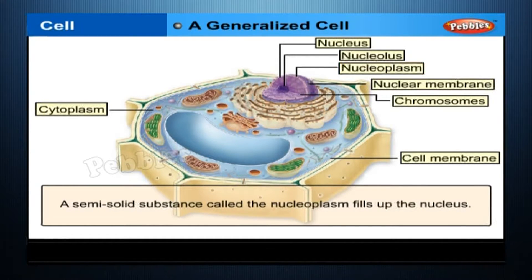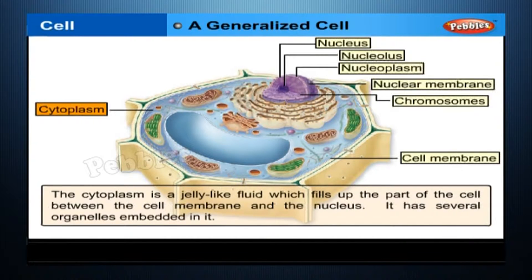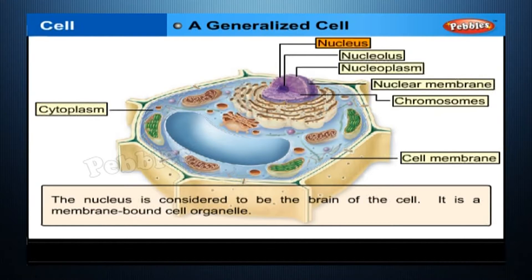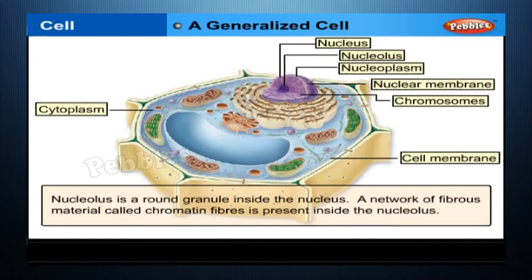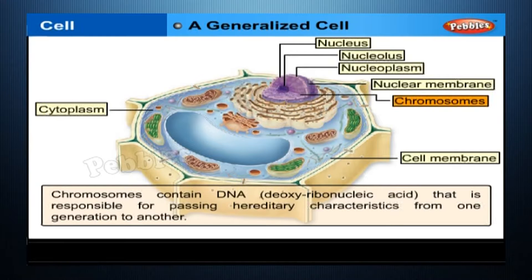The nuclear membrane is a thin membrane that separates the nucleus from the cytoplasm. A semi-solid substance called the nucleoplasm fills up the nucleus. The cytoplasm is a jelly-like fluid which fills up the part of the cell between the cell membrane and the nucleus; it has several organelles embedded in it. The nucleus is considered to be the brain of the cell and is a membrane-bound cell organelle. The nucleolus is a round granule inside the nucleus. A network of fibrous material called chromatin fibers is present inside the nucleolus. Chromosomes contain DNA — deoxyribonucleic acid — which is responsible for passing hereditary characteristics from one generation to another.